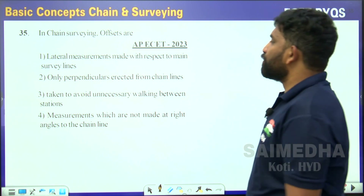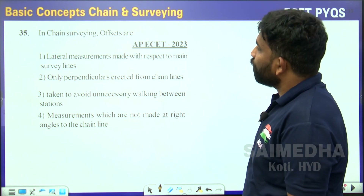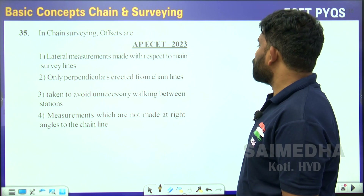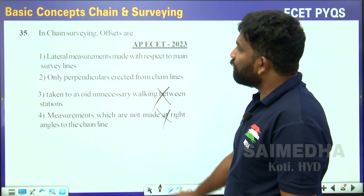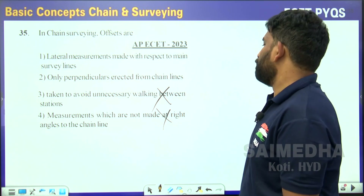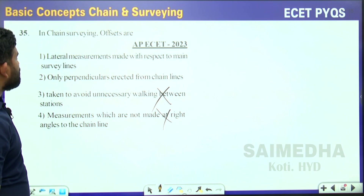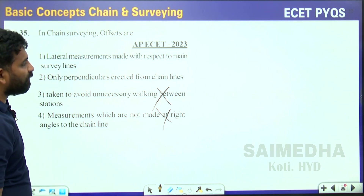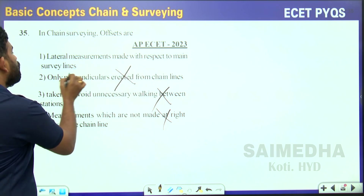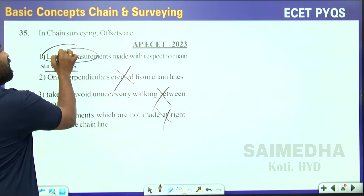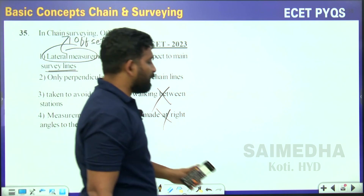In chain surveying, offsets are the lateral measurements made with respect to the main survey lines. They are not only perpendicular from the chain lines — offsets can be perpendicular or oblique, so we can't say they are not made at right angles. The correct answer is: lateral measurements made with respect to the main survey lines, which are the offsets.